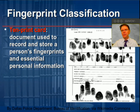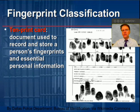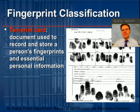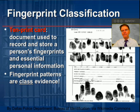What you see before you here is a 10-print card. Some of you are already familiar with this document. It's used to store and record a person's fingerprints and essential personal information. You can see the one behind me is the 10-print card of Lee Harvey Oswald, who infamously on November 22nd, 1963, shot President John F. Kennedy dead on the streets of Dallas. Keep in mind that fingerprints are not only individual evidence, but they're also class evidence.